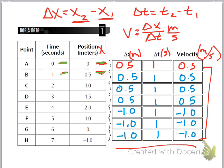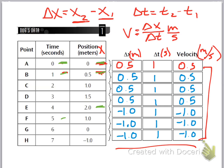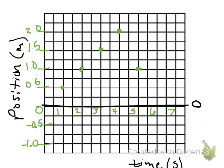Something happens to the dog and all of a sudden it starts to go backwards. How do we know it's going backwards? Well, if we're at 2 meters at 4 seconds and we go to 5 seconds, now all of a sudden we're only at 1 meter — 1 meter away from 0. So at 5 seconds we're sitting right here. He had to have turned around because now he's heading back towards where he started. Then it goes back to 0 at 6 seconds, and at 7 seconds he's all the way down to negative 1.